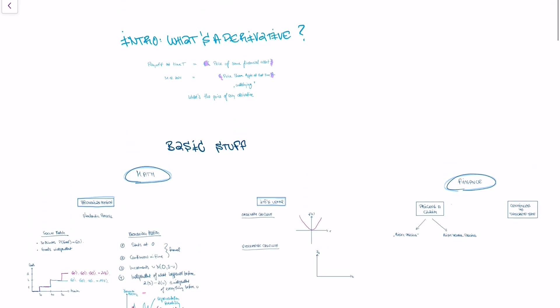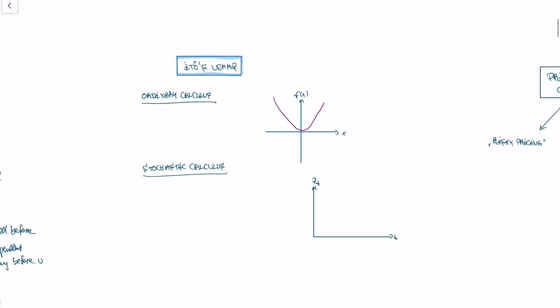We're in the series on the Black-Scholes model, and we first need to get down some basic stuff before we can actually derive the model. Today we're talking about Ito's lemma.